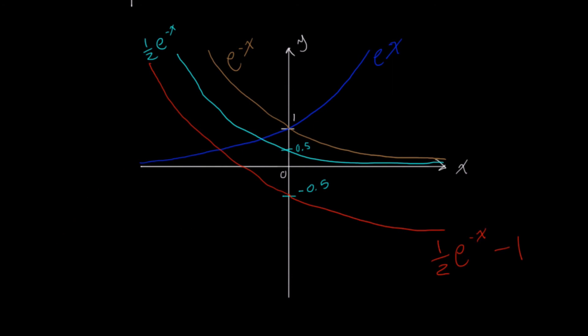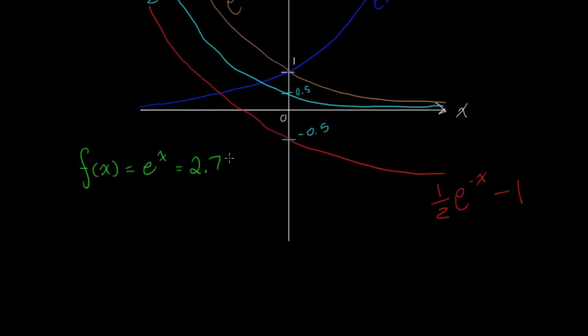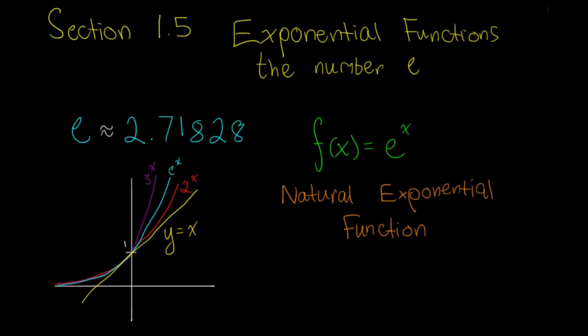And of course, you can think of the natural exponential function like this: f(x) equals e to the x. You can think of this as approximately 2.718 to the x. This is more accurate, so you should probably use e. So that is exponential functions and the number e.